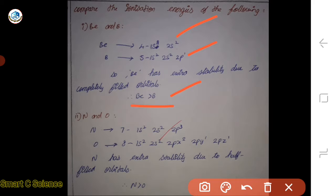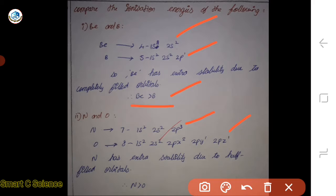Now for nitrogen and oxygen — this is very easy. Nitrogen has a 2p³ configuration with every orbital half-filled. Nitrogen has extra stability due to the half-filled orbitals. So nitrogen's ionization energy is higher than oxygen's.